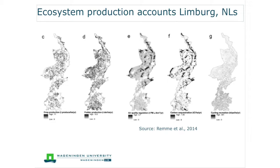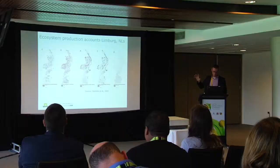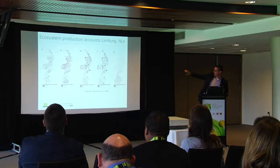Here we have an example of work done in the province of Limburg in the Netherlands, which gives a good illustration of the power of these maps. From left to right we have crop production, fodder production, air quality regulation, carbon sequestration, and finally cycling recreation — a spatial view of different parts of this province and their ability to produce these ecosystem services. We can see that even within a province, which isn't a particularly large area compared to somewhere like a natural resource management region in Australia, there's huge variability in the ecosystem's ability to produce these services.